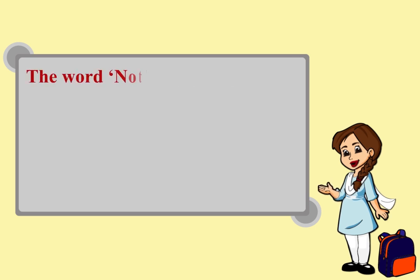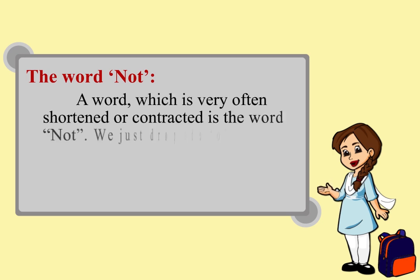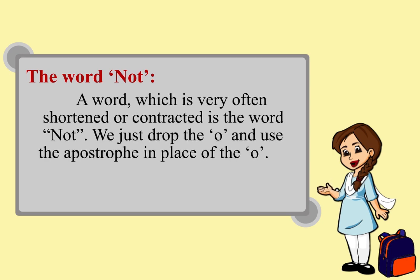A word which is very often shortened or contracted is the word 'not'. We just drop the O and use the apostrophe in place of the O.